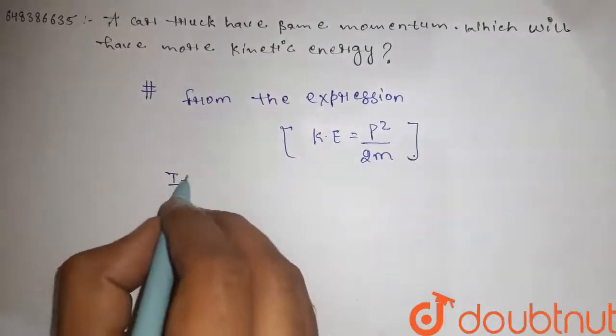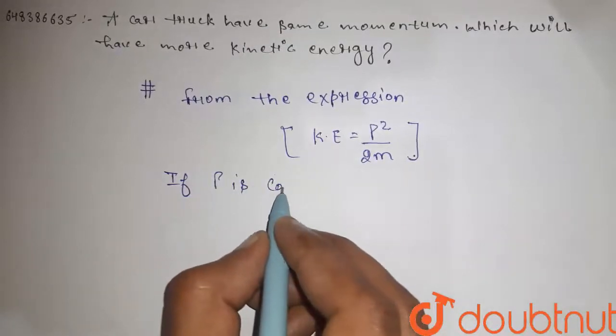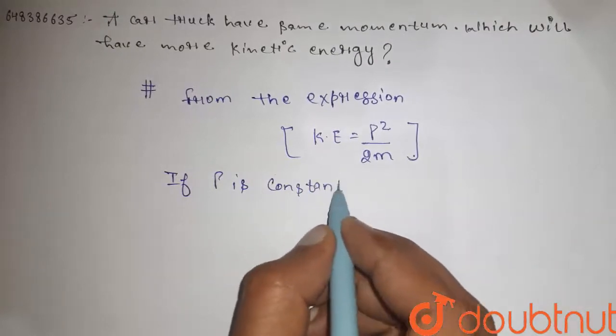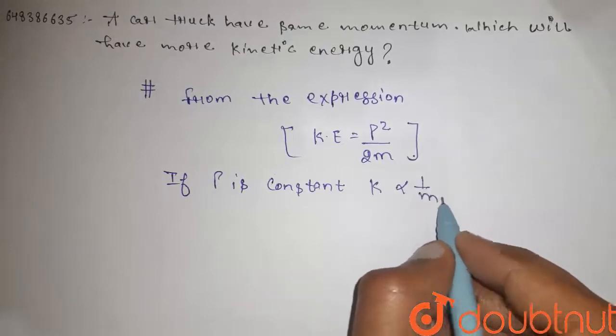So, if p is constant, then K is inversely proportional to the mass.